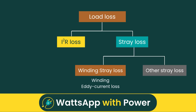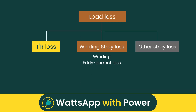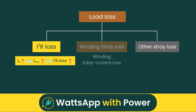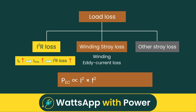Let's review how harmonic currents impact the three parts of load loss. First, I-squared R loss increases as the RMS value of the current increases. When harmonic components are present in the load, they add to the total RMS current, thereby increasing the I-squared R loss. Second, harmonic currents have a significant impact on winding eddy current loss — it increases with the square of both current and frequency. Harmonics, being higher frequency components, greatly increase winding eddy current loss, leading to higher winding temperatures and the risk of hot spots.